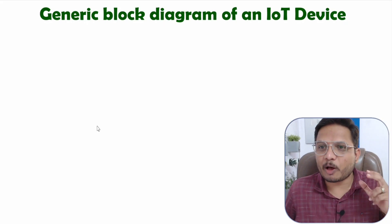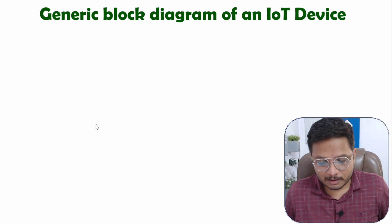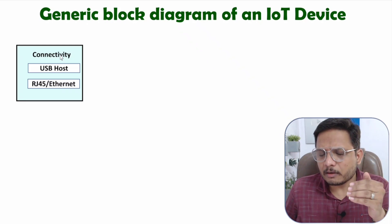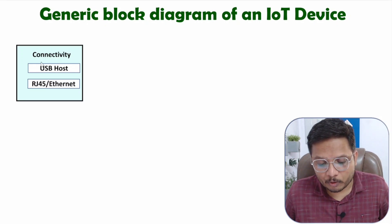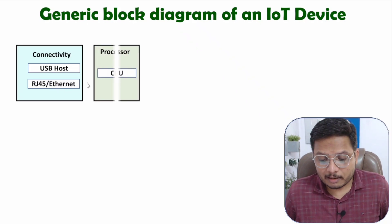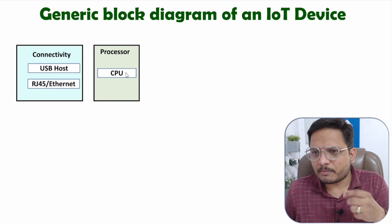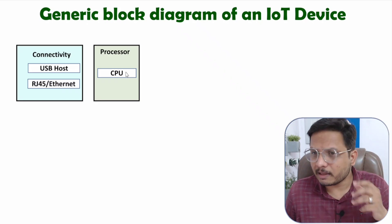Now I will explain you the generic block diagram of an IoT device. Let me explain you that block by block. In the first block, let us understand how connectivity is there. Connectivity should be given to things with the IoT server, and for that one can have connectivity protocols based on USB or protocols based on Ethernet. That is how connectivity is provided. When it comes to the processor block, usually you will be focusing on CPU. In embedded systems, we will be using microprocessor and microcontroller, which is used to optimize our application and decide the operational speed of a given application.